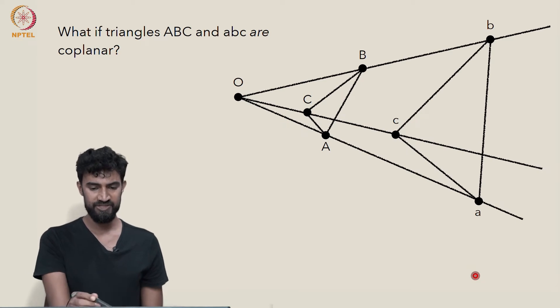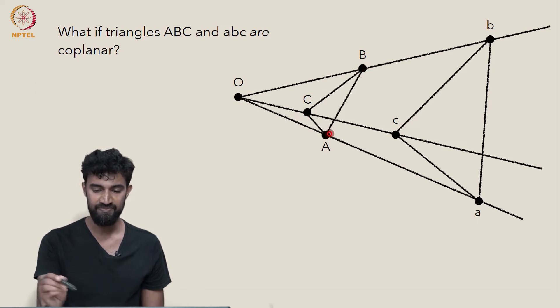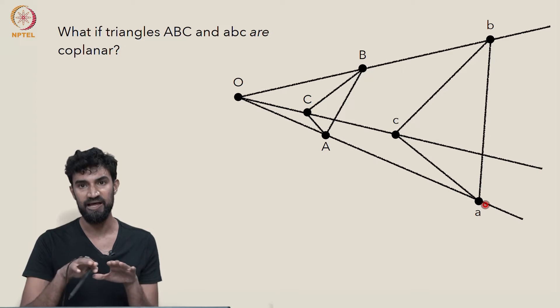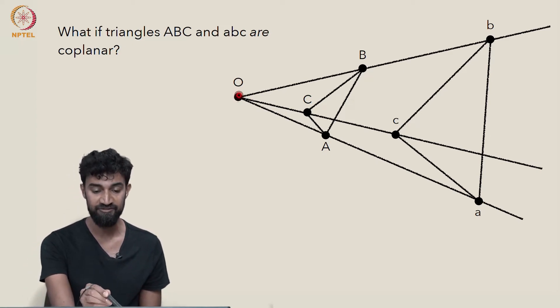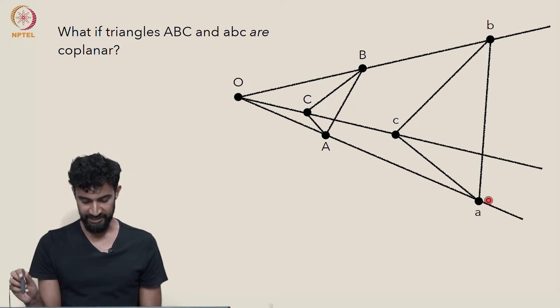So here's a diagram showing a representation of two triangles, capital A, capital B, capital C, and little a, little b, little c, which are coplanar. They lie in the same plane, but they're in perspective from this point O. So that's all in one plane.